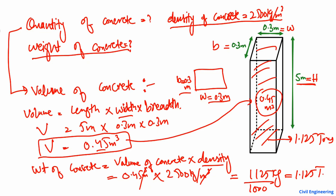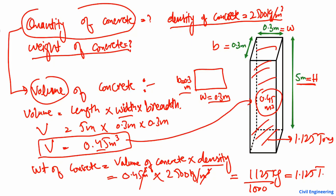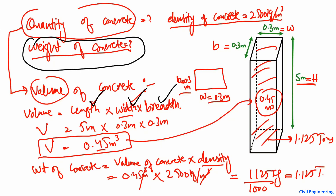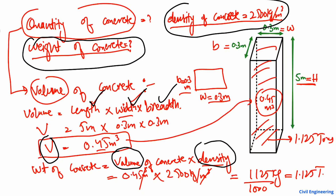To summarize: to find the quantity of concrete, you find the volume of the column by multiplying the three dimensions — length, width, and breadth. For the weight of concrete in any unit, multiply the volume by the density of concrete, which is a fixed value of 2500 kg per cubic meter. You can then convert into any units such as pounds, grams, or tons. In this example, the weight is 1125 kg, or dividing by 1000, we get 1.125 tons.